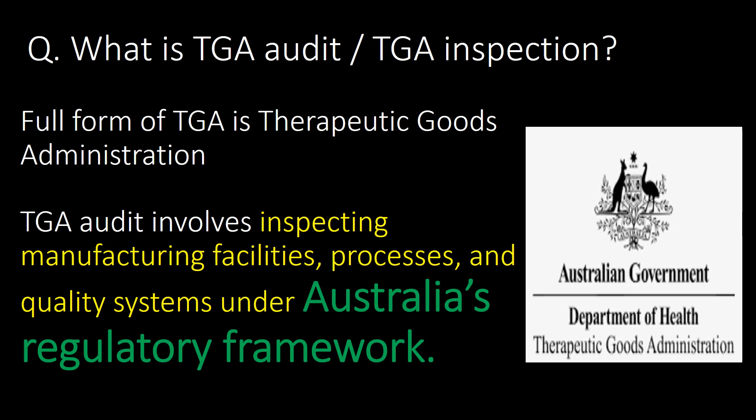Welcome. We will start with some basic questions and then go into detail. First question: what is a TGA audit or TGA inspection? The full form of TGA is Therapeutic Goods Administration. A TGA audit involves inspecting manufacturing facilities, processes, and quality systems under Australia's regulatory framework.